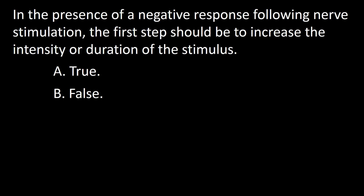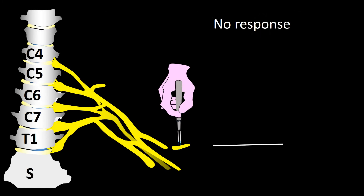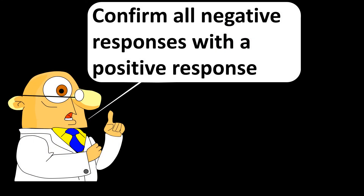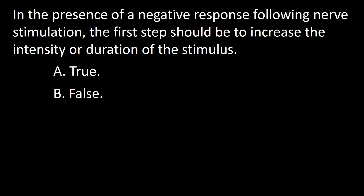Next question: in the presence of a negative response following nerve stimulation, the first step should be to increase the intensity or duration of the stimulus. A: True, B: False. If you find no response in a nerve, first check a good one to confirm it is not a problem with the stimulator. It is important to confirm all negative responses with a positive response. So the answer is false.